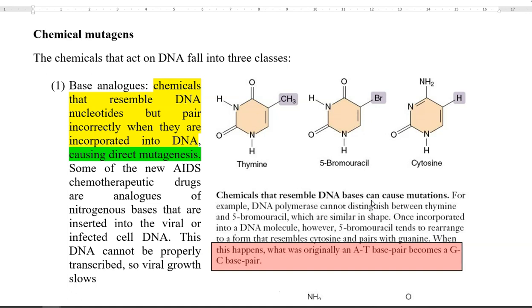Where these chemicals find application in biology is in their use in drugs. For example, new AIDS chemotherapeutic drugs are mainly some kind of base analogs of nitrogenous bases that are inserted into a viral or infected cell's DNA. Thus, the inserted cell's DNA cannot properly transcribe, and as a result, the viral growth can be slowed down in the organism.